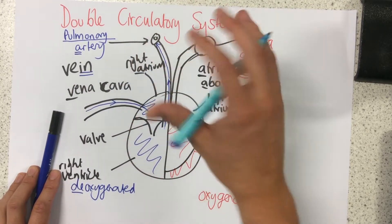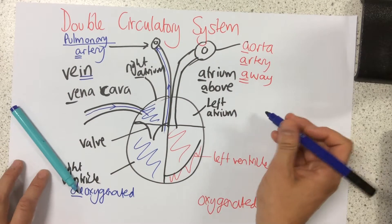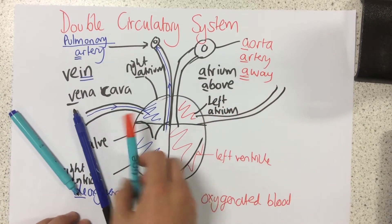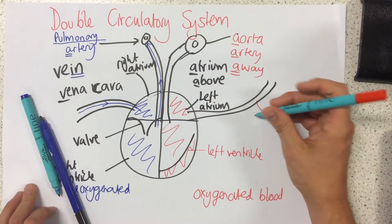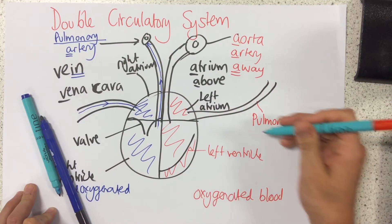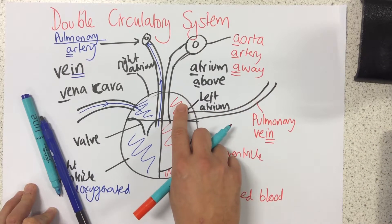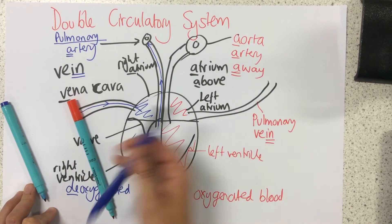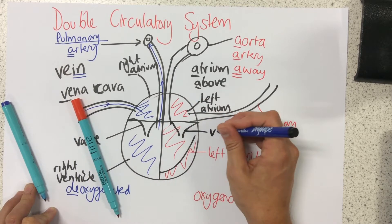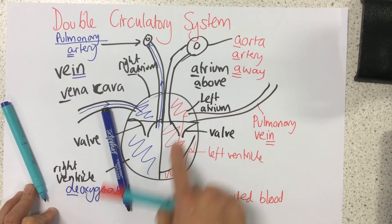Once that blood has been to the lungs, it picks up lots of oxygen and comes back into the heart, ready to be pumped around to the rest of the body. It enters via this vessel here — it's to do with the lungs, and it's taking blood into the heart — so it's called the pulmonary vein. The pulmonary vein takes blood into the left atrium. Then, just like on the right-hand side, we have a valve, so blood travels from the left atrium through this valve to the left ventricle.